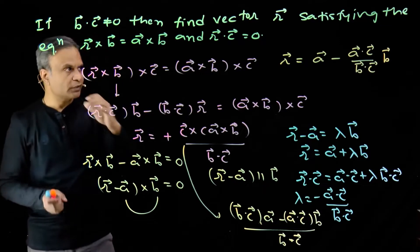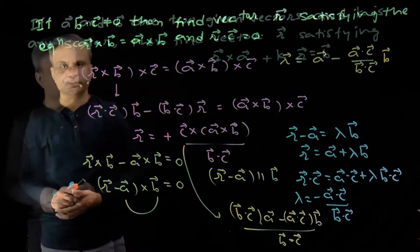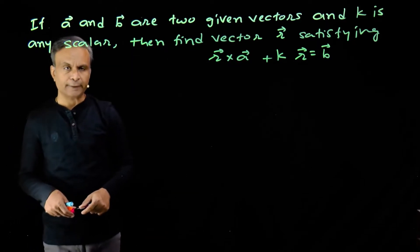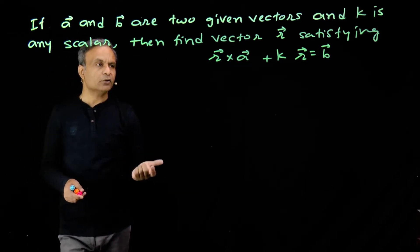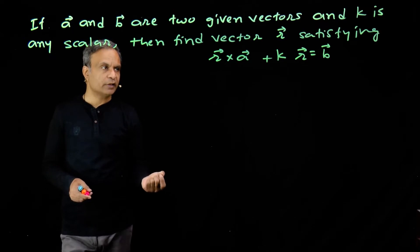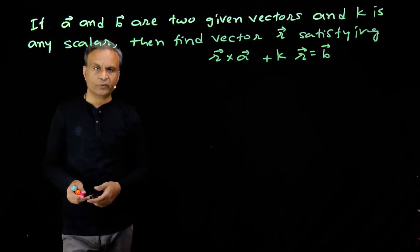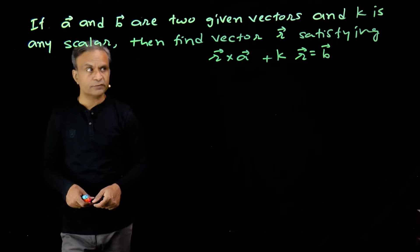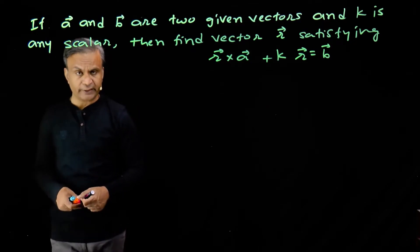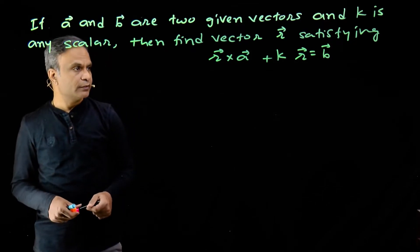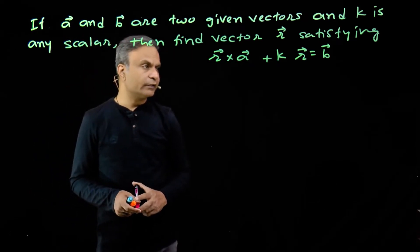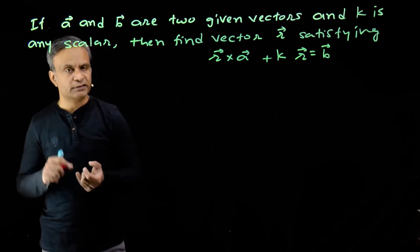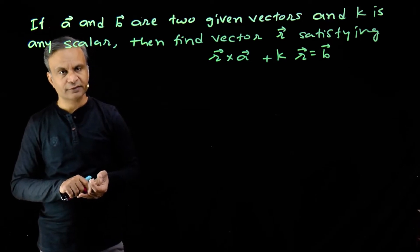We get more questions from this category. Now we have to solve this vector equation for vector r: r cross a plus k times r is equal to vector b, where a and b are two given vectors and k is a scalar. We have to get vector r in the form of vectors a, b and scalar k.